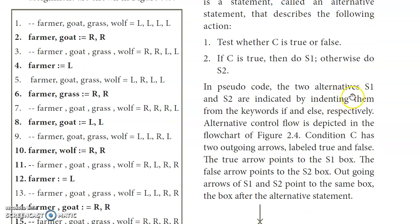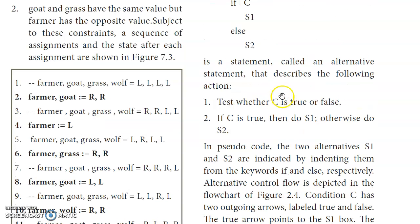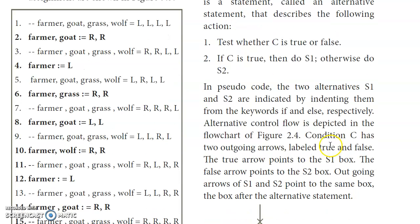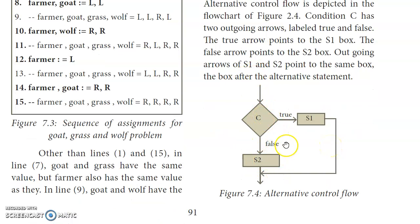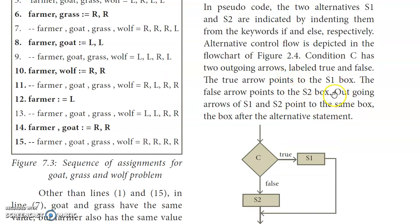In the pseudo code, there are two alternative statements S1 and S2. The condition is checked — true or false is decided. If true, control flows to S1; if false, control flows to S2. After either S1 or S2 executes, the control comes back to the next statement. The outgoing arrows of S1 and S2 point to the same box — the box after the alternative statement — and then control flows to the next statement.